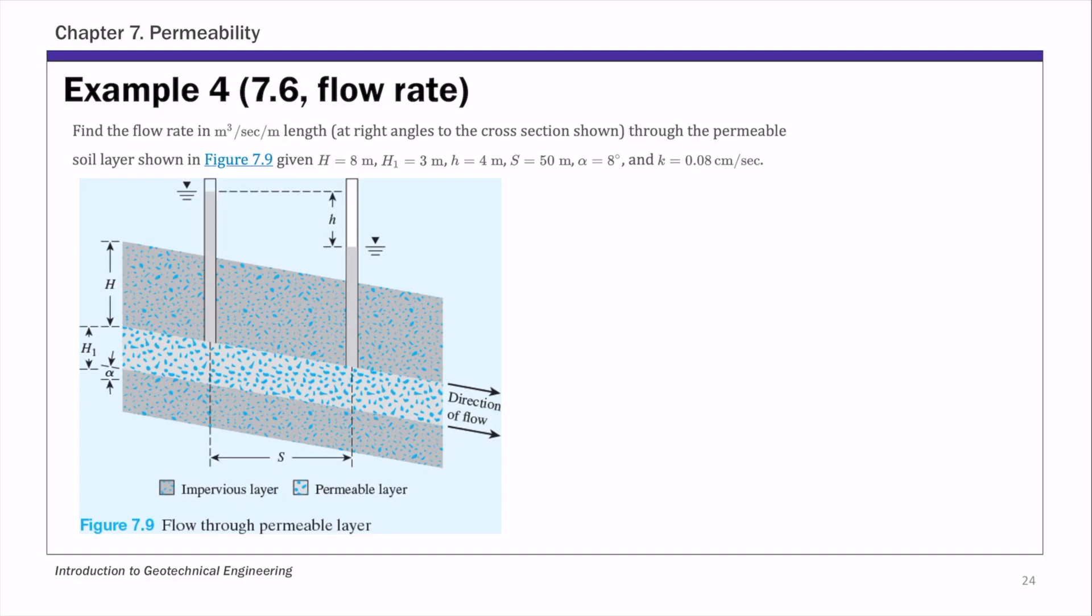This is example 4 of chapter 7 permeability. For this example, we're going to calculate flow rate. This is similar to the previous example, example 3. We're calculating flow rate in terms of volume per second per unit width into paper. So basically, this is area per second unit.